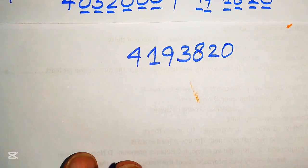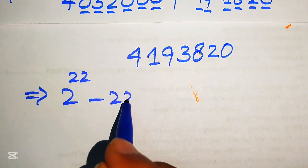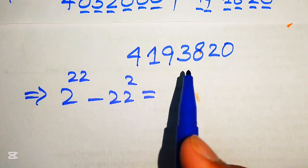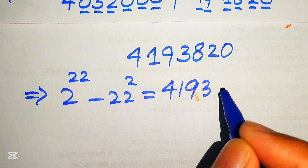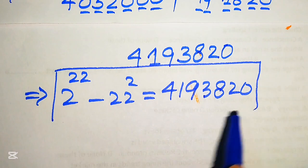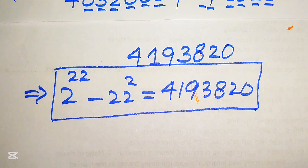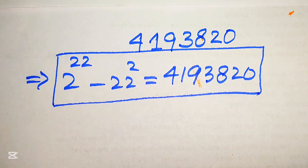Finally, 2 to the power of 22 minus 22 to the power of 2 equals 4,193,820. This is our final answer. I hope you like this video — please like it, and if you have any other method in mind, don't hesitate to write it in the comment section. Thank you so much for watching; please subscribe to my channel for more exciting videos.